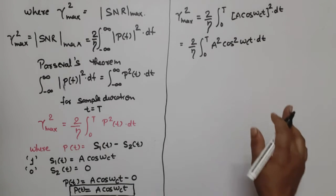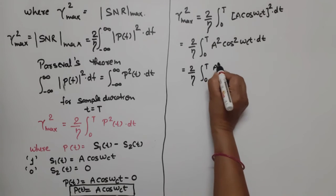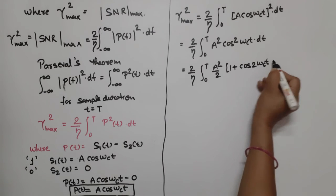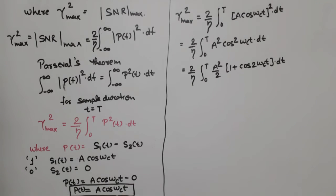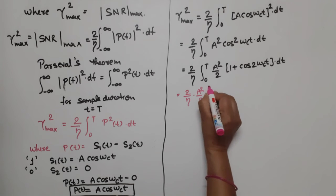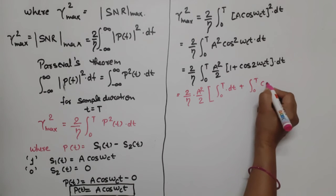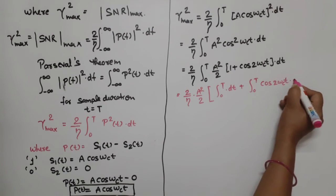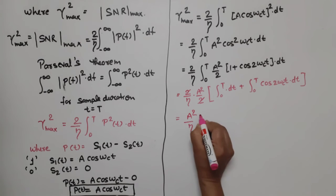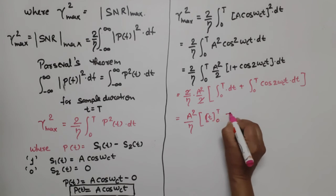If we expand cos²(ωct) using the trigonometric identity, then this equation becomes 2 divided by eta, times the integral from 0 to T of A²/2 times [1 plus cos(2ωct)] dot dt. Opening this up, we get 2 divided by eta times A²/2, times the integral from 0 to T dt plus the integral from 0 to T of cos(2ωct) dot dt.